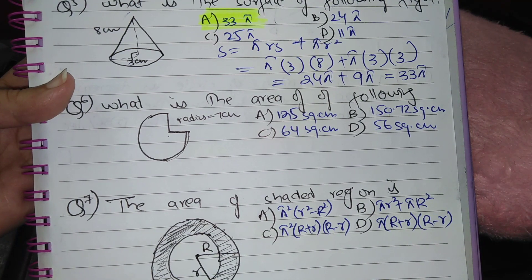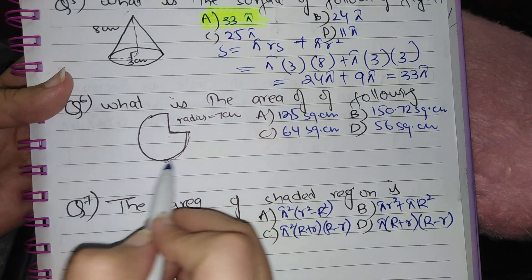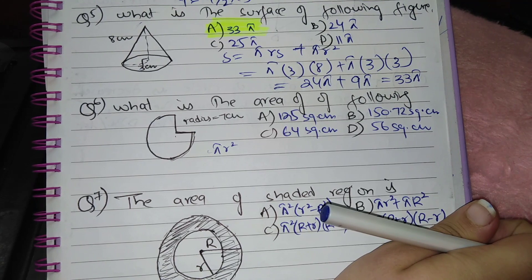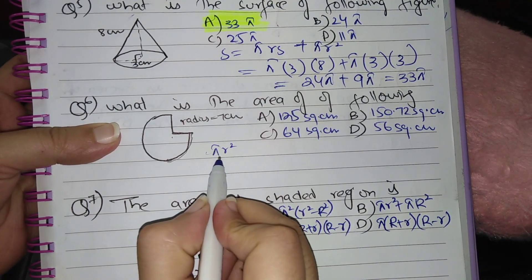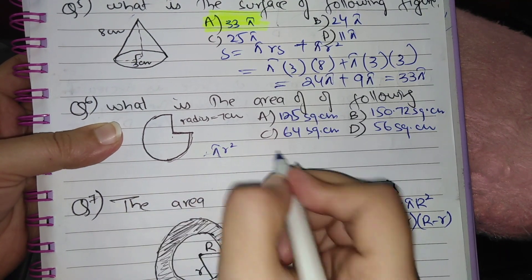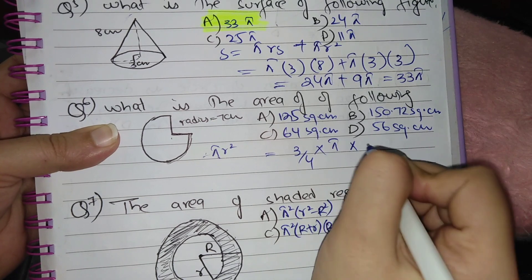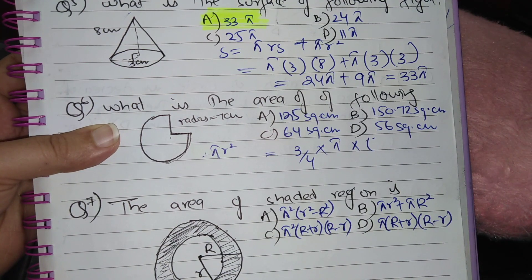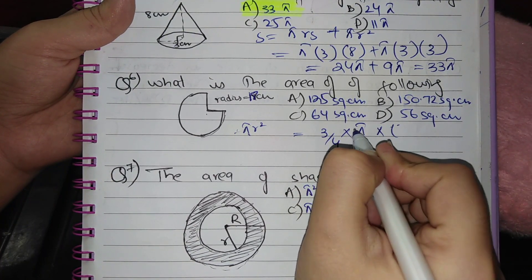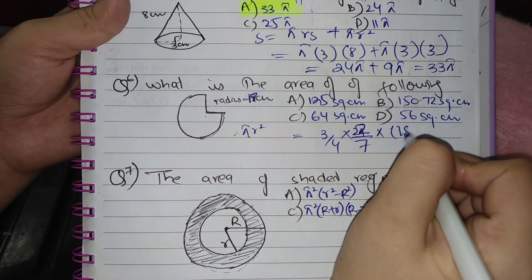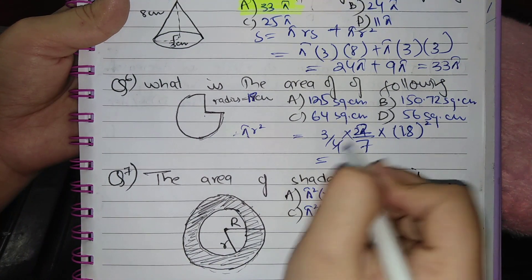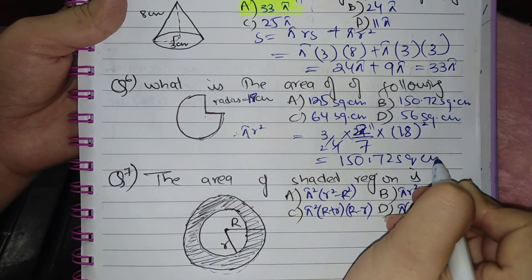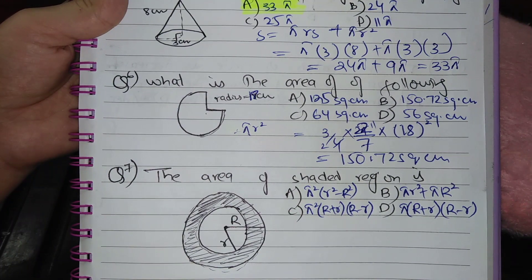Question 6: Find the area of the following figure, which is ¾ of a circle. The area of a complete circle is πr². Since ¾ of the circle is given, multiply by ¾. So: (3/4) × (22/7) × r², where r = 18. After simplifying, the result is 150.72 square centimeters. The correct option is B.